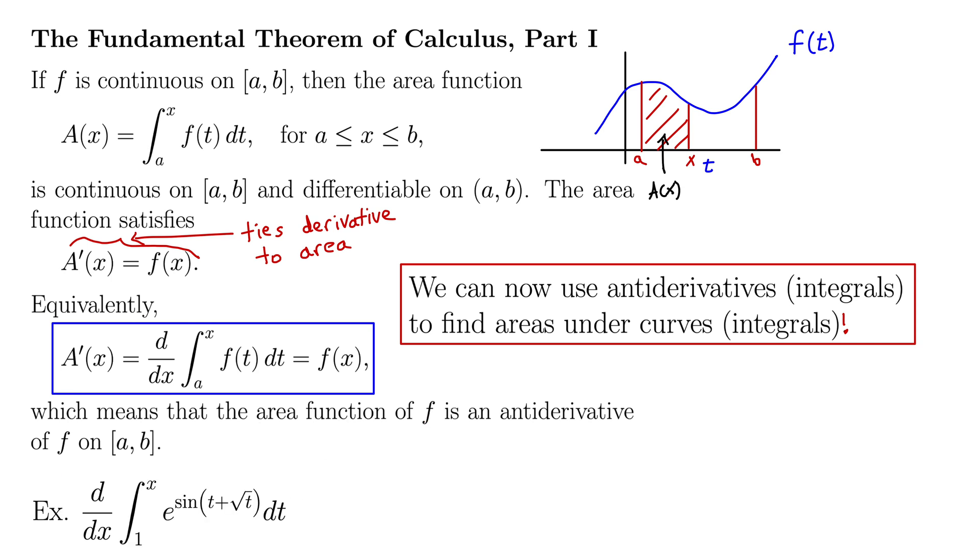Okay, here we go. For example, we have the derivative d/dx of the integral from 1 to x of e^(sin(t + √t)). All of that is dt. If we use the theorem, it tells us that when we take the derivative of an integral, we essentially think of these as undoing each other because the integral is an anti-derivative, the derivative is a derivative.